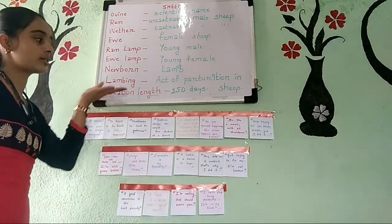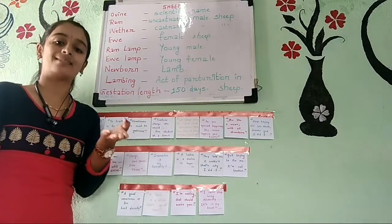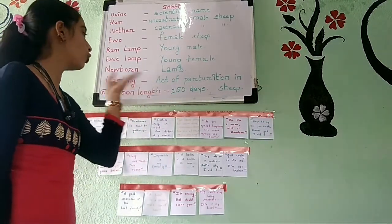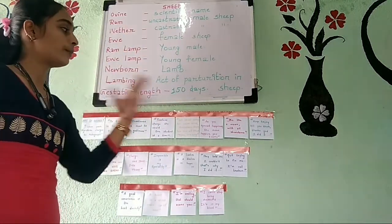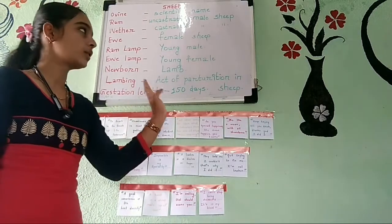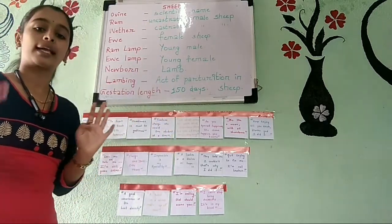Next, gestation length — gestation length means pregnancy time. The gestation length for sheep is 150 days. So this is some of the general information about sheep.